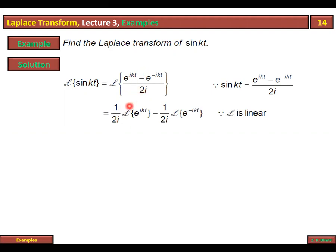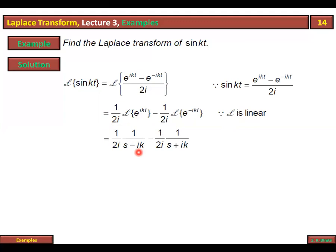The Laplace transformation of e^(ikt) can be taken using the linearity of the Laplace transform. Applying the Laplace transform of e^(at), which gives 1/(s minus a). So the Laplace transform of e^(ikt) becomes 1/(s minus ik), and the Laplace transform of e^(-ikt) becomes 1/(s plus ik).